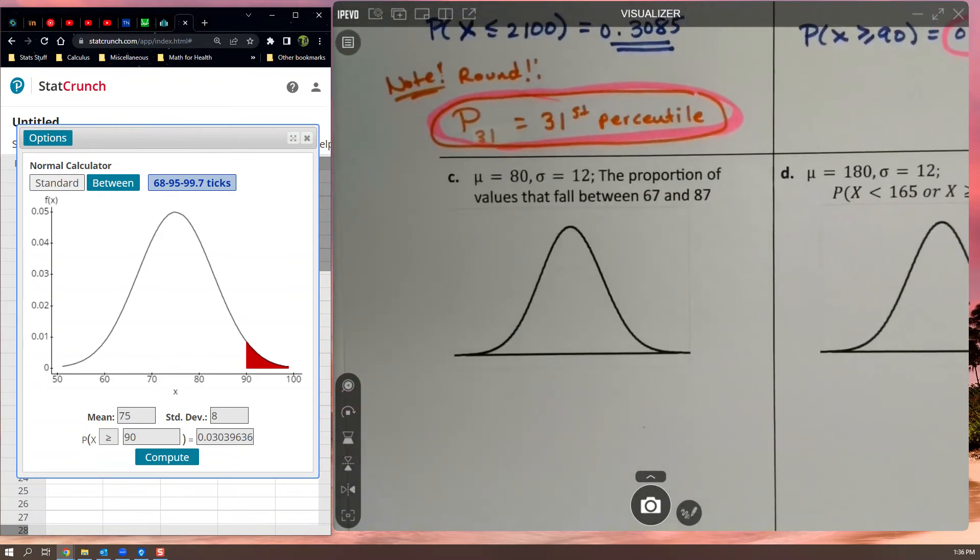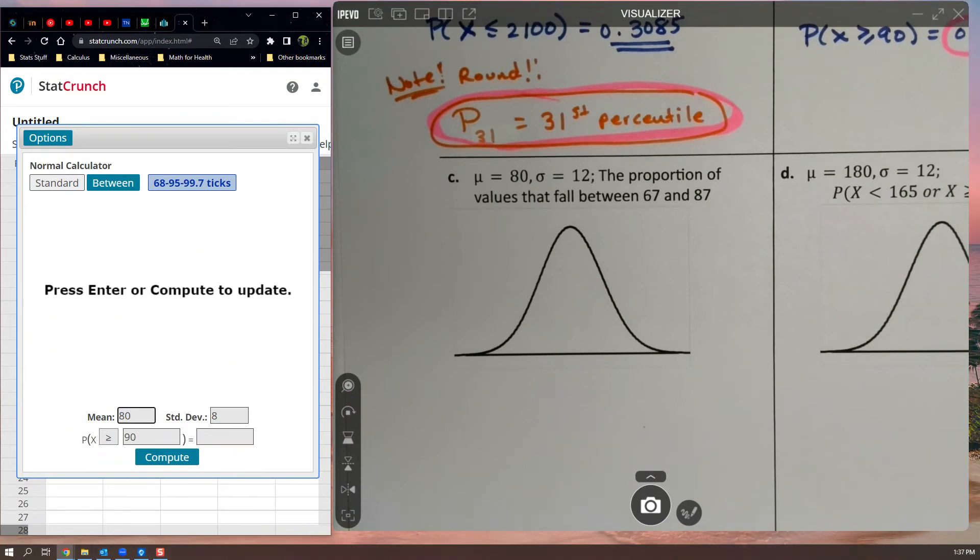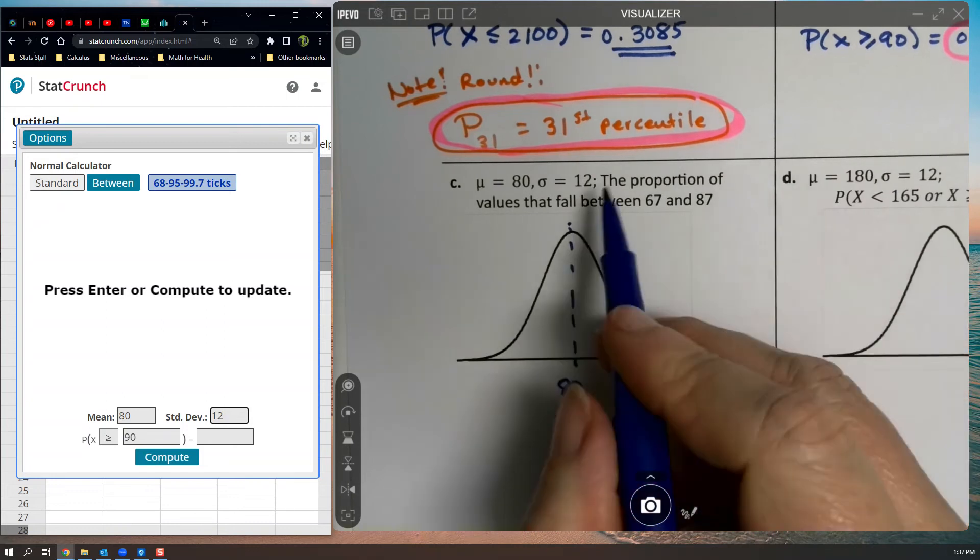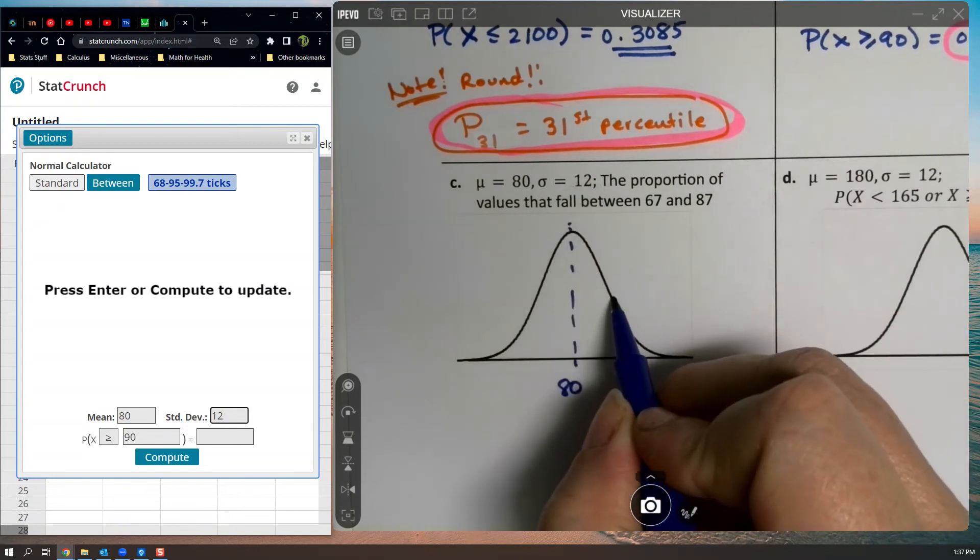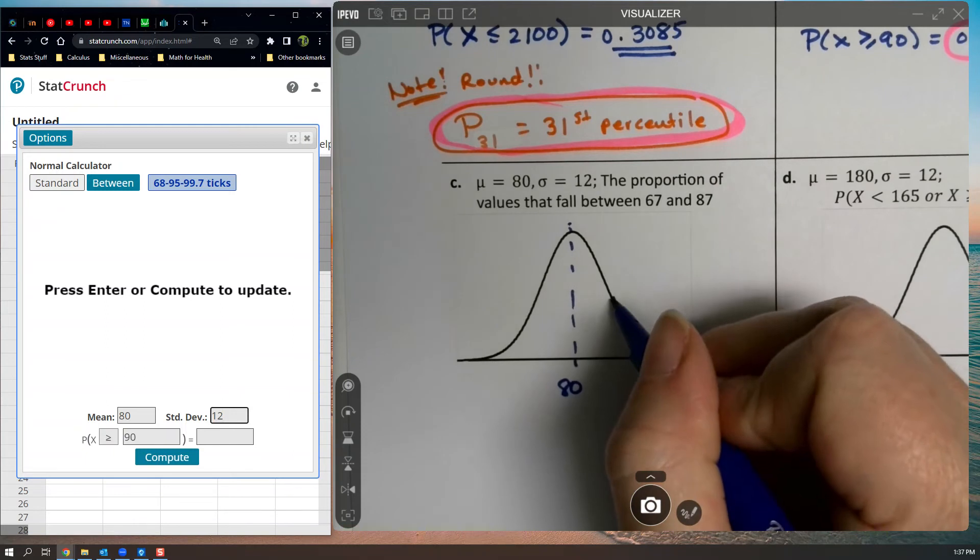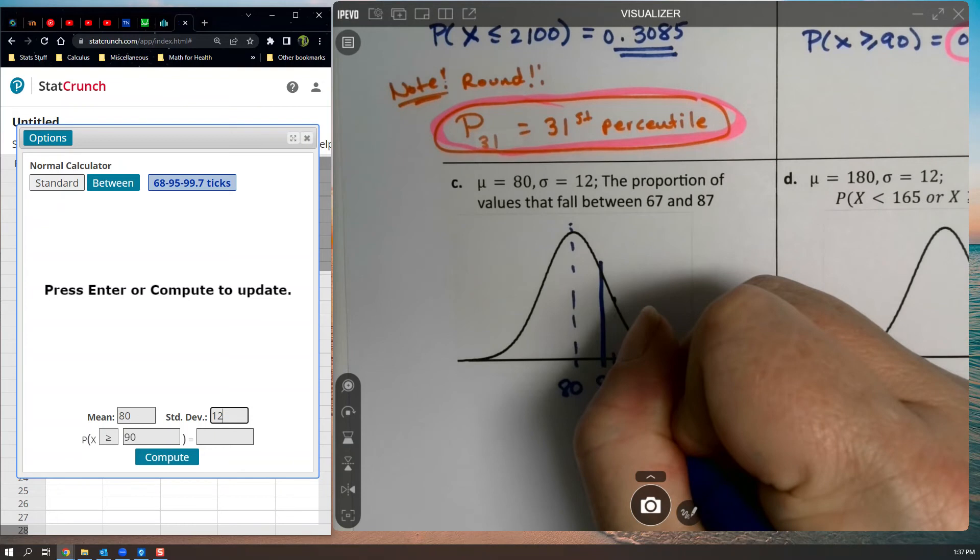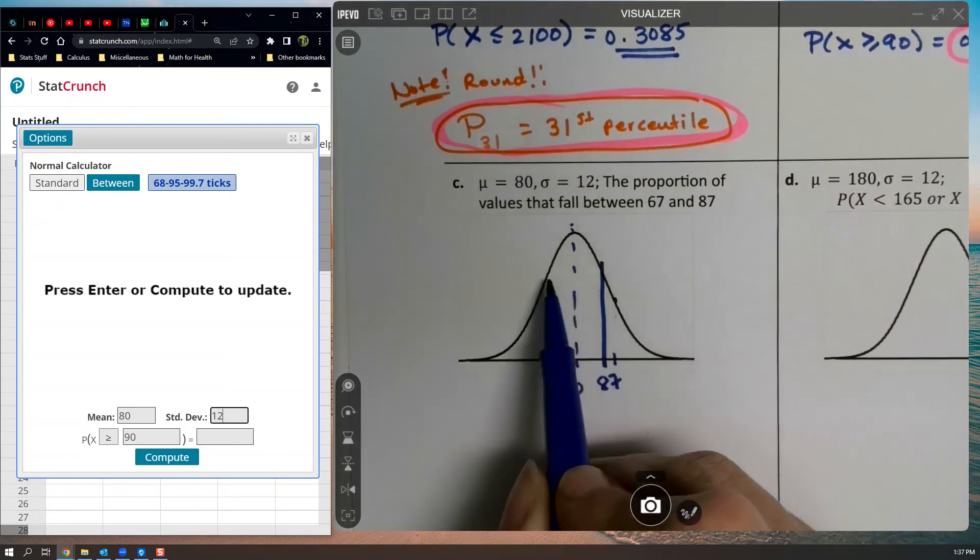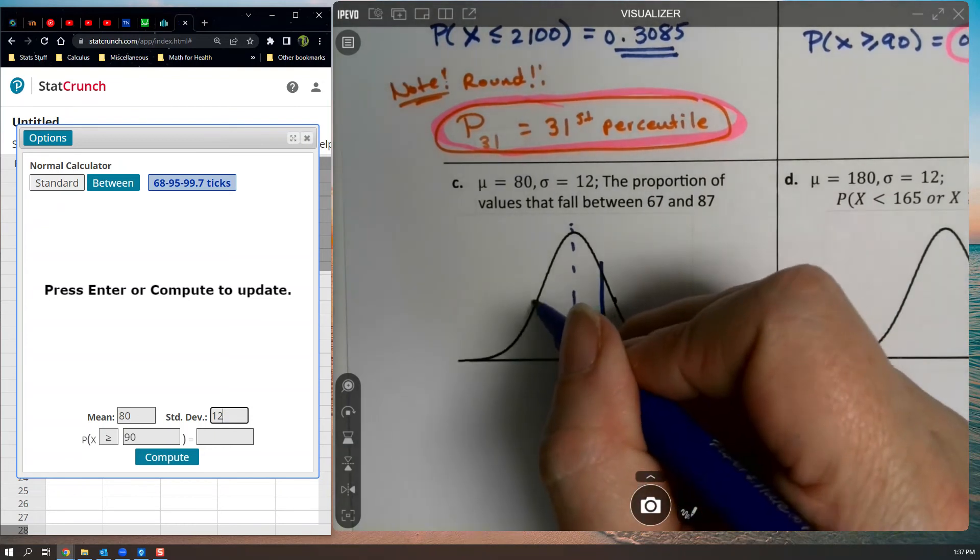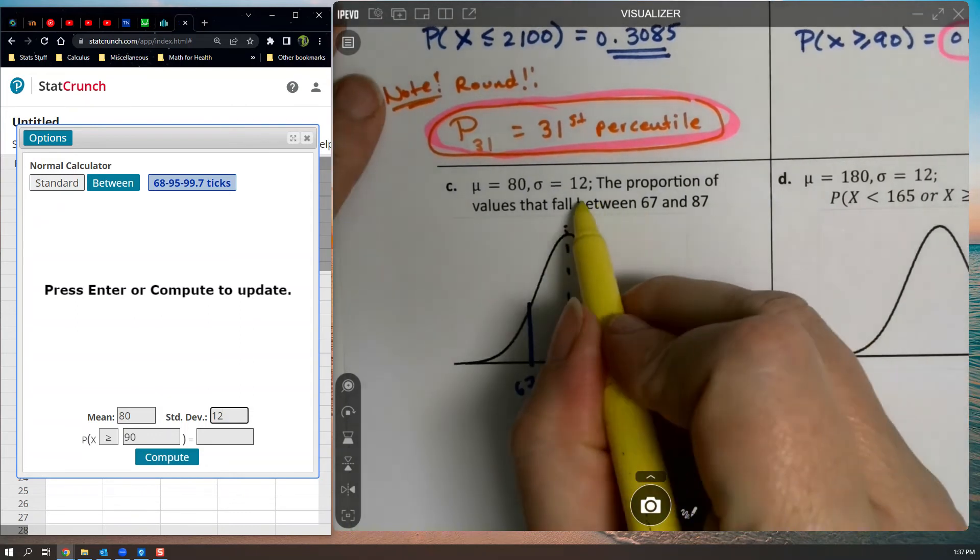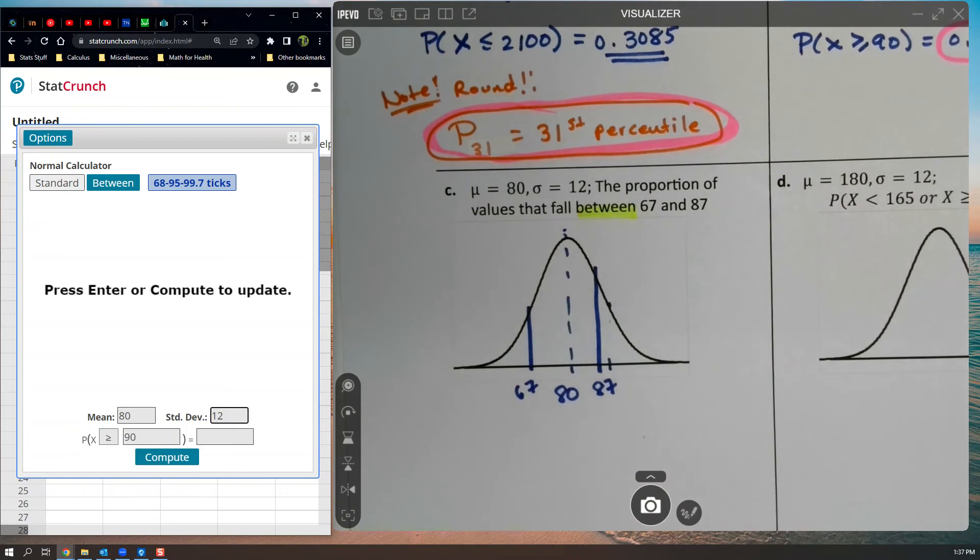New problem. They've got the mean is 80. The standard deviation is 12. And we're talking about the proportion of values that fall between 67 and 87. So if the mean is 80 and a standard deviation is 12, that means that this value right here is at about 92. So if that's 92, 87 is in here somewhere. So there's 87. 67 is a little further away than that. 67 is over here. And it says it wants between those values. So that's good. We want to shade in between them then.